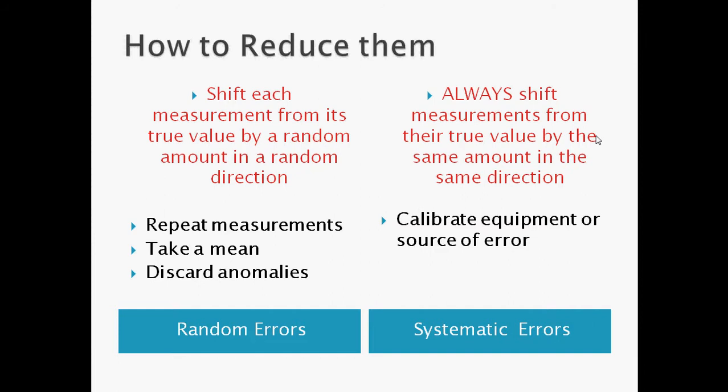When I do that, I'm not reducing the error itself. I'm not making it not happen, but I'm reducing the effects of the error. Because if I repeat my measurements, I'm going to have more chances of having a more correct measurement done in my list. And I can then take a mean. If I look at the values and I have one that is completely off, I can see that that's going to be an anomaly and disregard or discard that anomaly.